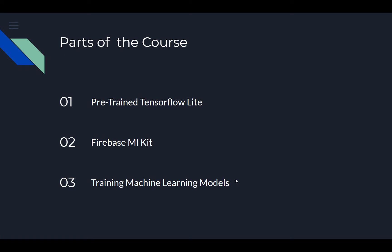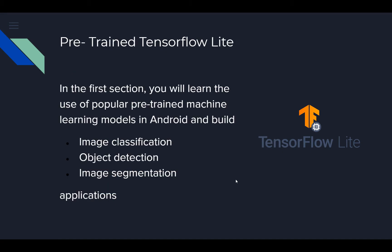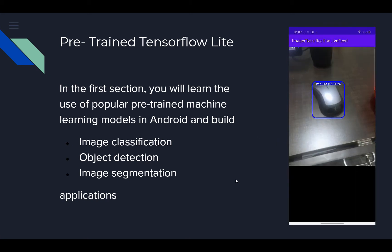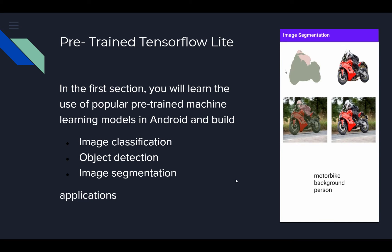The course is divided into three main parts. The first part is related to TensorFlow Lite models. Whenever there is a discussion regarding mobile machine learning, the first name that comes to mind is TensorFlow Lite, and it is the most prominent library used for mobile machine learning. In the first part, we will learn the use of popular TensorFlow Lite models in Android and build image classification, object detection, and image segmentation applications.